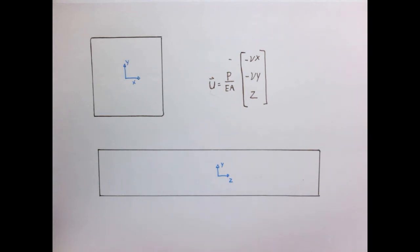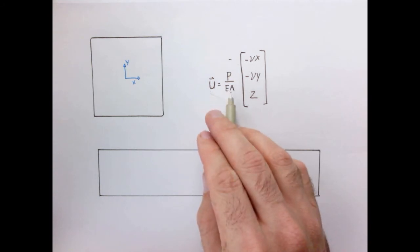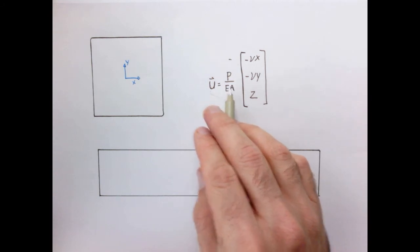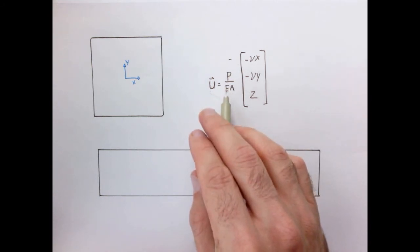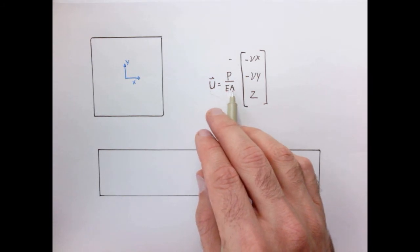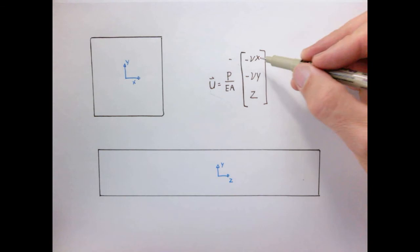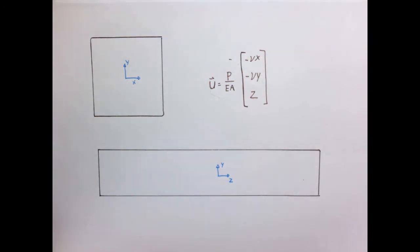So the vector field that we found for the displacement all has this common factor of P over EA. And if we think about the units there, this is a dimensionless quantity, because E is force per unit area. So when I multiply force per unit area by area, I get force. So force over force is dimensionless. So each of the vectors for displacement has the coordinate system X, Y, Z. These two in the X, Y plane have a factor of minus nu Poisson's ratio. And remember, like a typical metal, this might be something like a third.